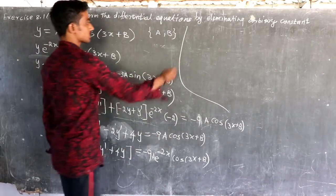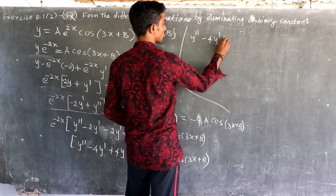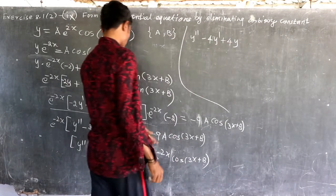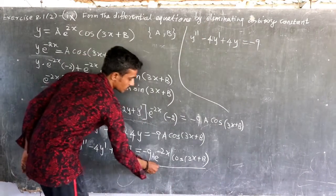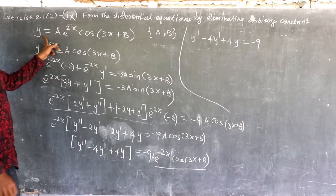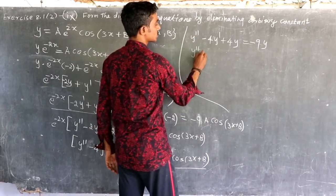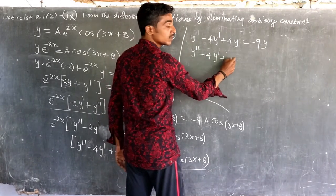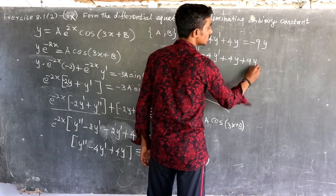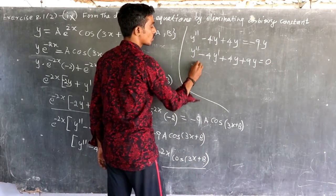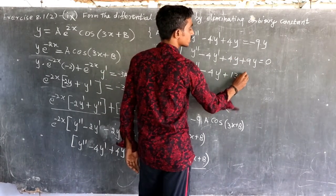y double dash minus 4y dash plus 4y equals minus 9, you have replacement. y double dash minus 4y dash plus 4y minus 9y plus 9y equals 0. Add: y double dash minus 4y dash plus 9y plus 3y equals 0.